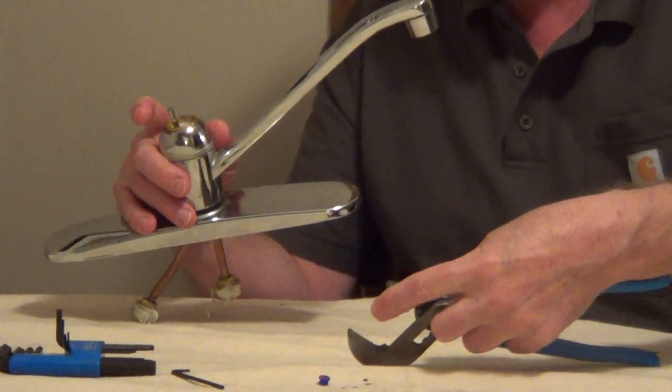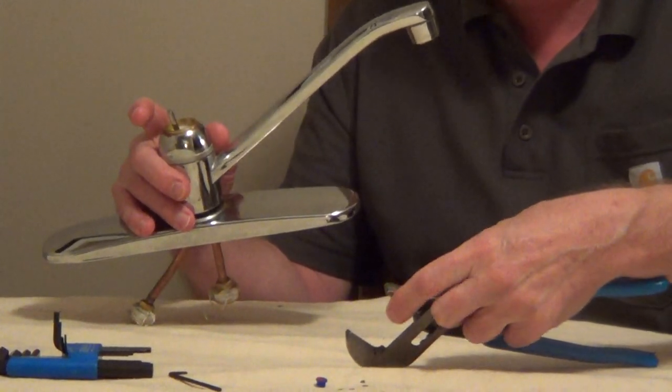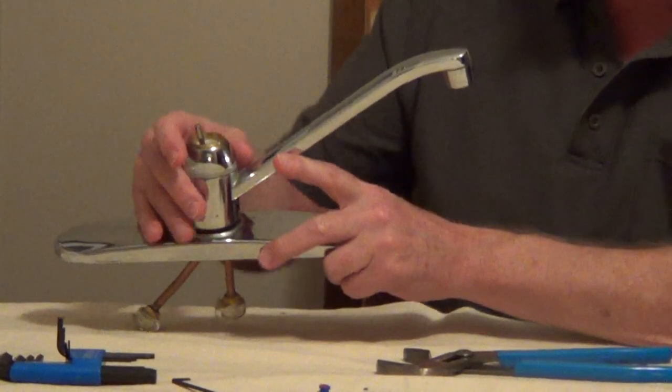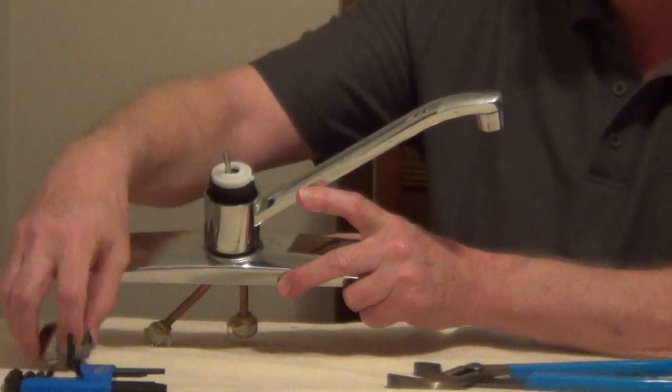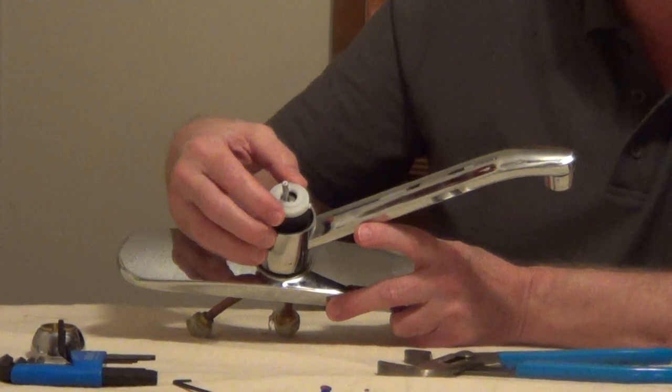Another trick I like to use is just get a little electrical tape and wrap the jaws. That way it will grab this without scarring it. Once we remove this cap, it's going to allow us to get to the cam.